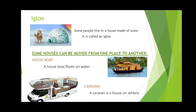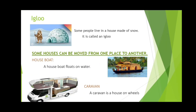Next is the igloo. Some people live in a house made of snow — it is called an igloo. We can see igloos in cold regions. These houses are made of big, solid blocks of snow and can also be used to live in.